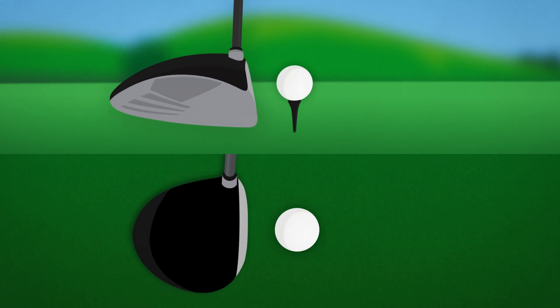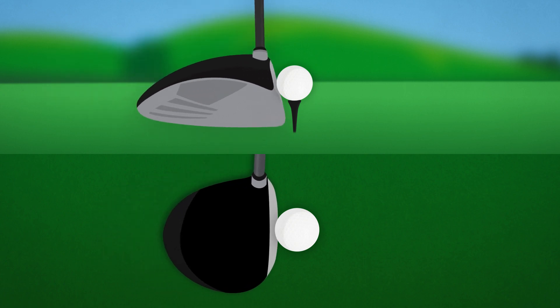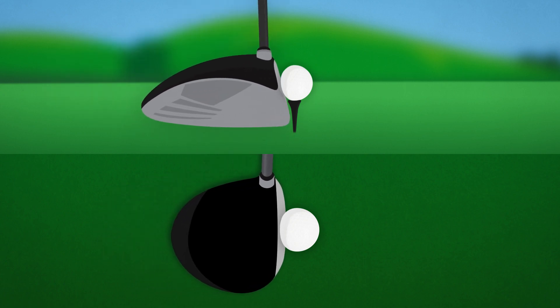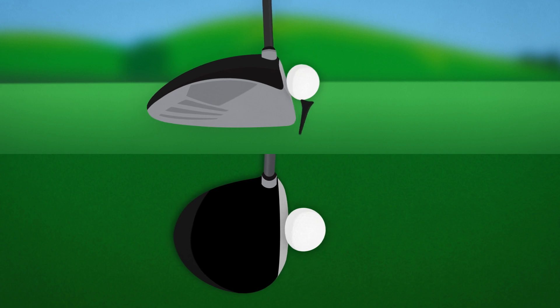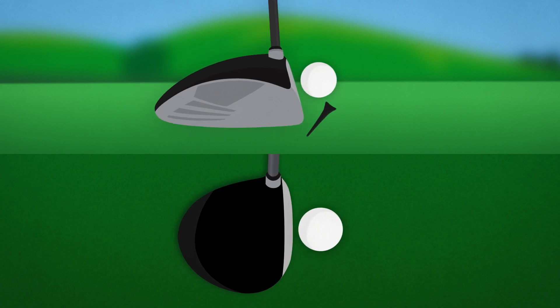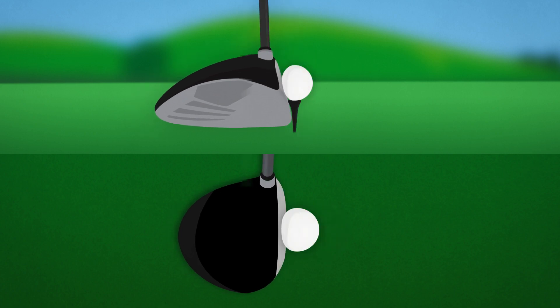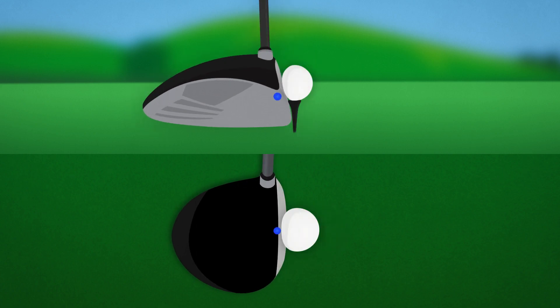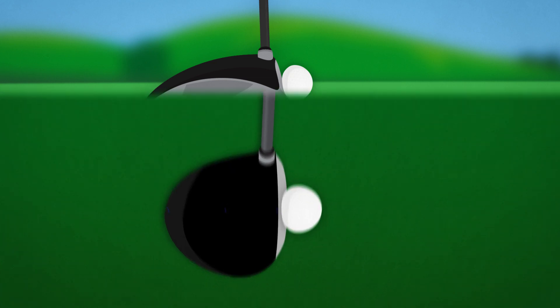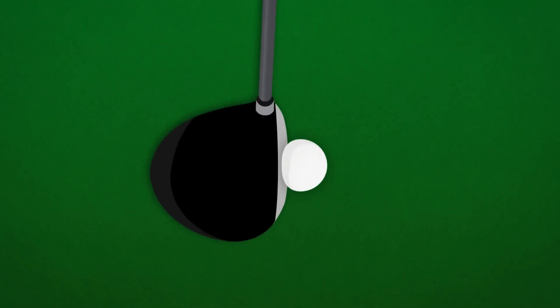the when is typically described as first touch, maximum compression, or separation. The where could be described as the front of the face, center of the club, or back edge. It could also be defined as the heel or toe.